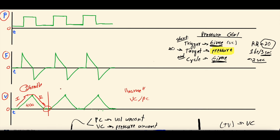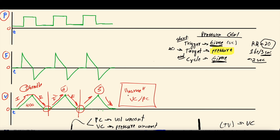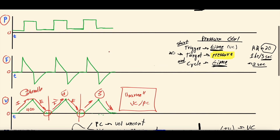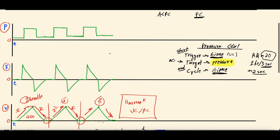Each breath on the volume-time scaler follows the same pattern: the ventilator gives the breath (inspiration), then the patient breathes it all out (expiration) back to zero — that's your tidal volume. This inspiration-expiration pattern repeats with each breath, and it looks the same between volume control and pressure control. The pressure and flow scalers, however, look different between the two modes.